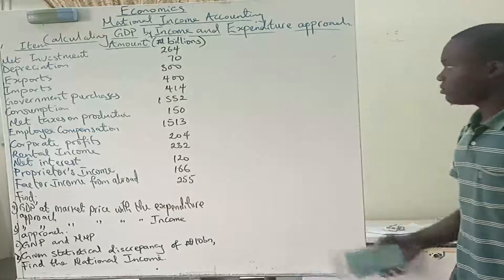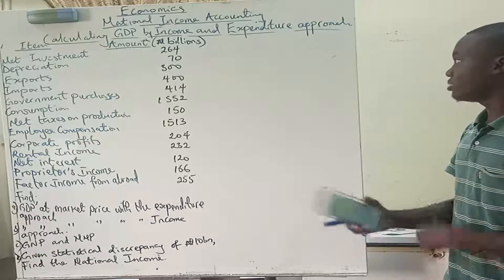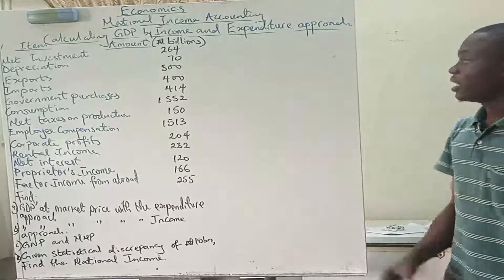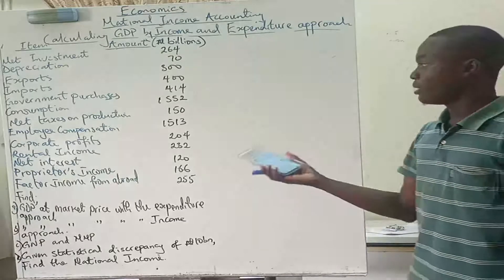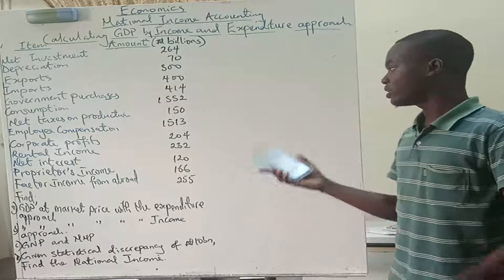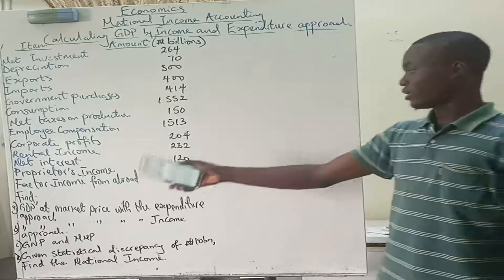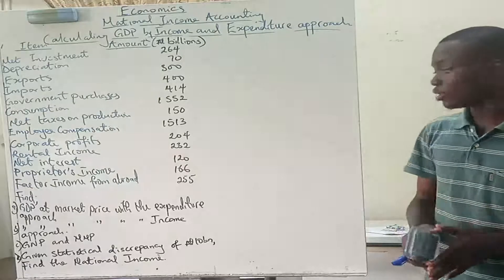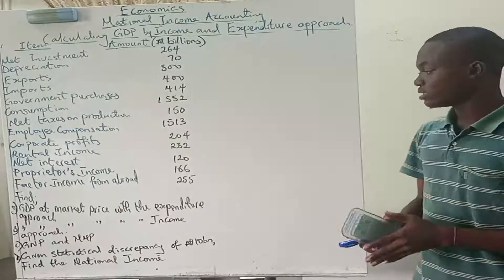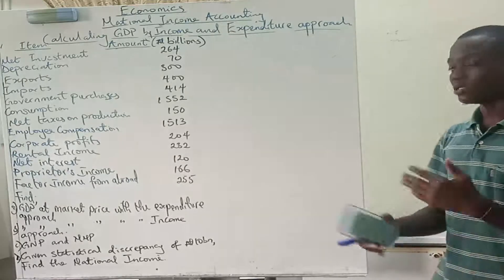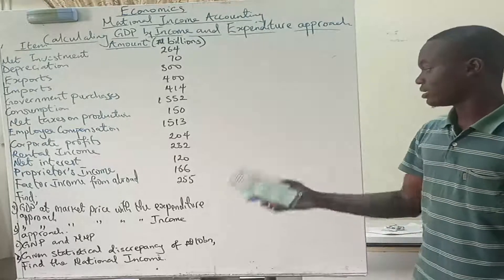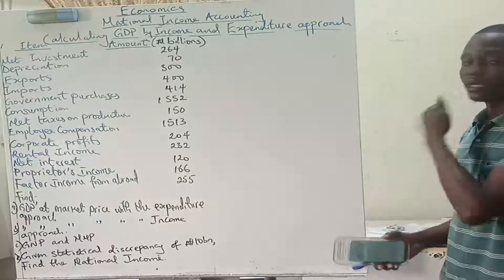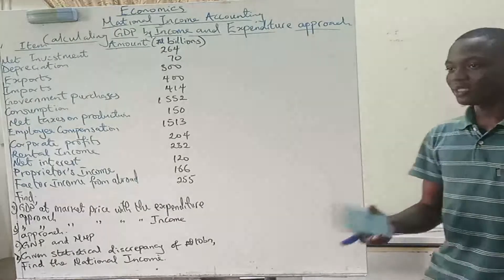When we have a question like this, we are given items: net investment, depreciation, exports, imports, government purchases, consumption, net taxes, employee compensation, profit, rental income, net interest, proprietors' income, and factor income from abroad. We then have to find: (1) GDP at market price via the expenditure approach, (2) GDP at market price via the income approach, (3) GNP and NNP — gross national product and net national product — and (4) given a statistical discrepancy of 10 billion naira, find the national income.